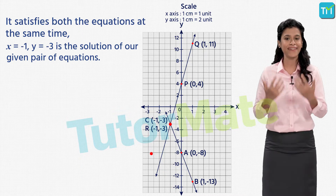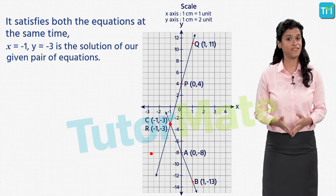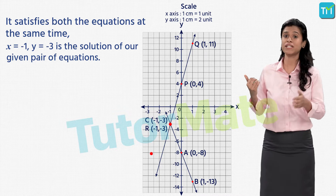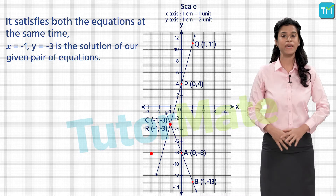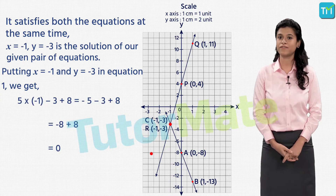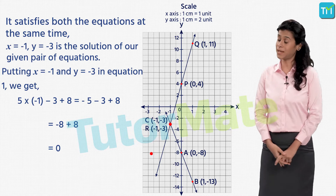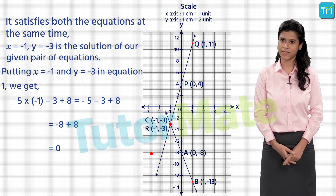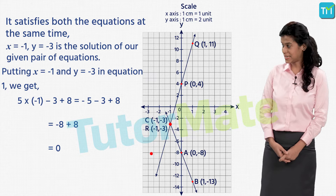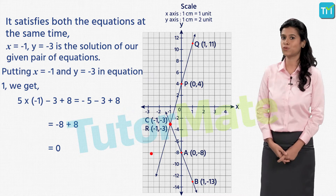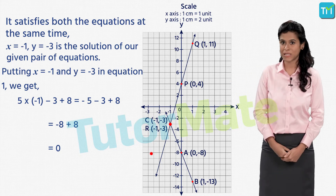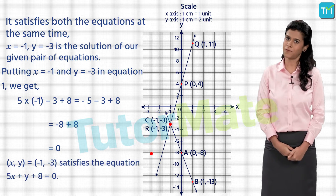Therefore, the point of intersection of the two straight lines is the solution of our given pair of equations — these values of x and y satisfy both equations. Let us verify by substituting: with x equal to minus 1 and y equal to minus 3, the first equation becomes 5 into minus 1 minus 3 plus 8, which gives minus 5 minus 3 plus 8, equal to 0 — the RHS. So x equal to minus 1 and y equal to minus 3 satisfies the first equation.